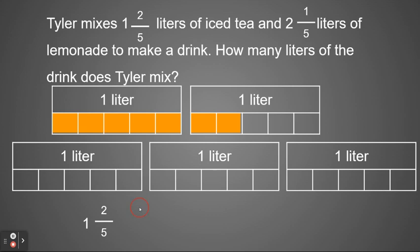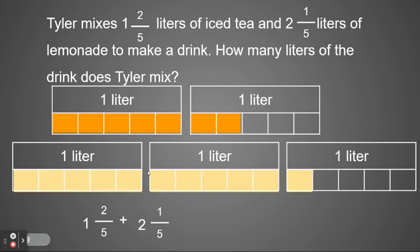We're going to be adding one and two fifths plus two and one fifth. Let's shade in two and one fifth — so now we have two wholes and one fifth. Looking at the picture, I see three full liters and three parts, so that's three fifths. All together we have three and three fifths liters.